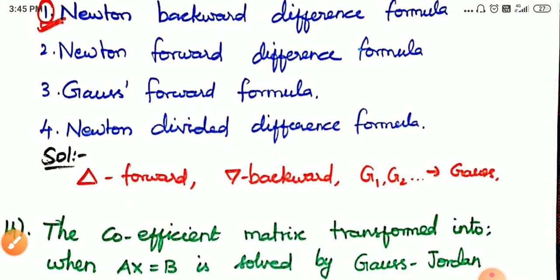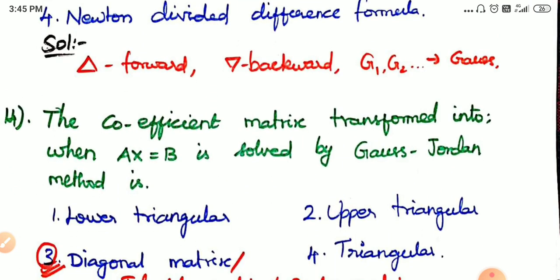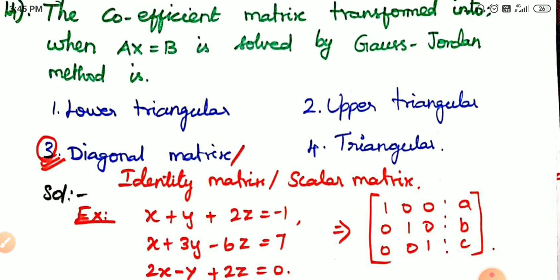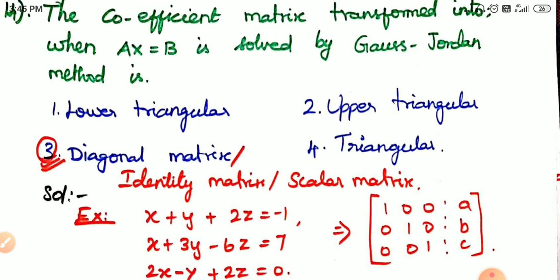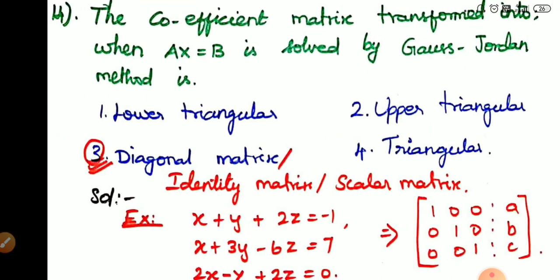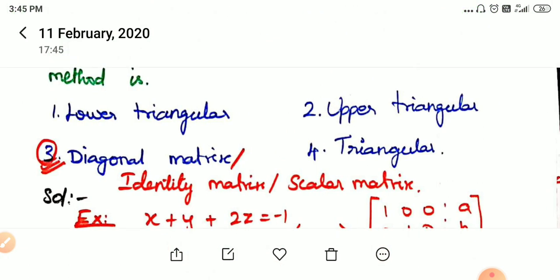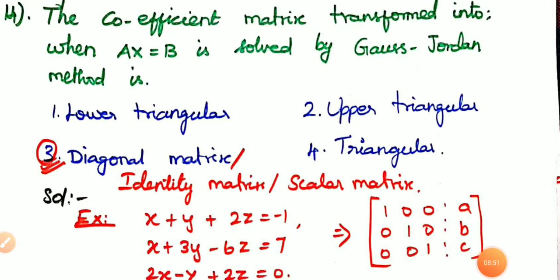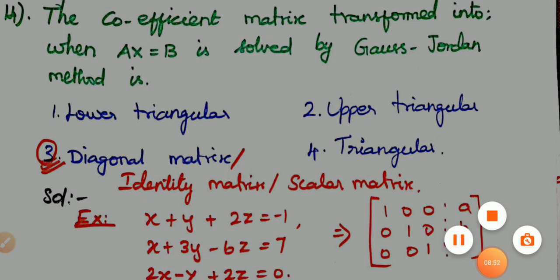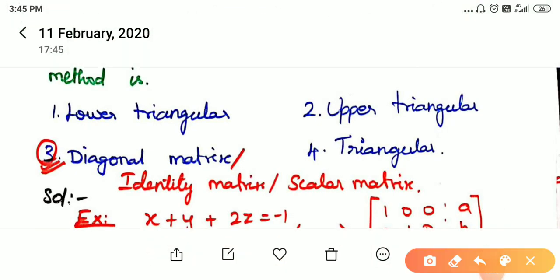The next question: the coefficient matrix is transformed into what form when ax = b is solved by the Gauss-Jordan method? In the Gauss-Jordan method, we solve by transforming the coefficient matrix. Let's see how we solve the coefficient matrix using this method.